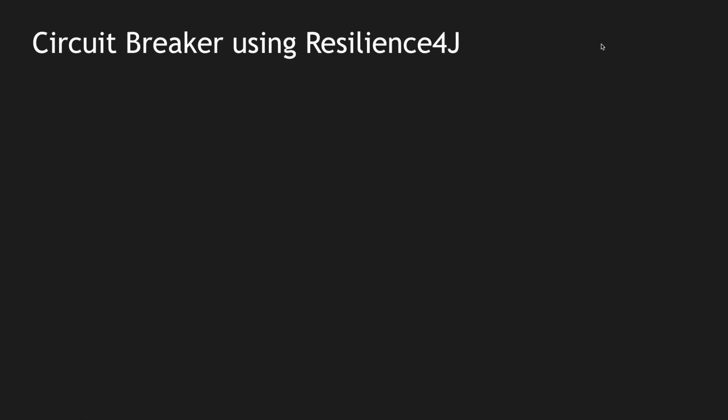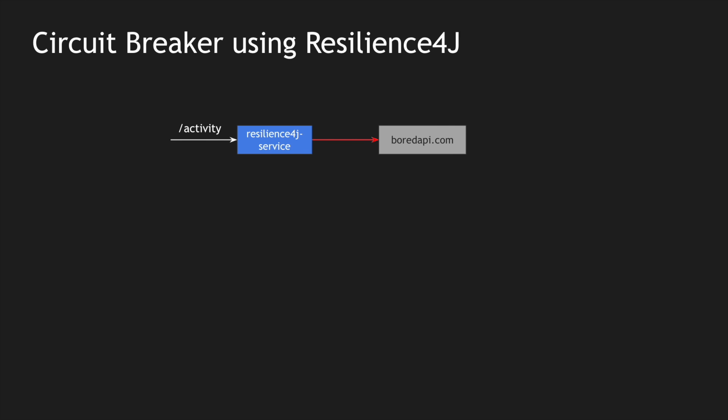Before getting into the hands-on, I want to brief about what circuit breakers are at a high level. Imagine I have an application called the Resilience4j service. I have an API called Activity — I use something called the Bored API, a public API that returns a random activity every time you hit it. When the Bored API goes down, our service returns exceptions. Using a circuit breaker you can stop frequent calls, reduce the number of calls, or have a fallback method — for example, telling people to watch the Tech Primers YouTube channel.